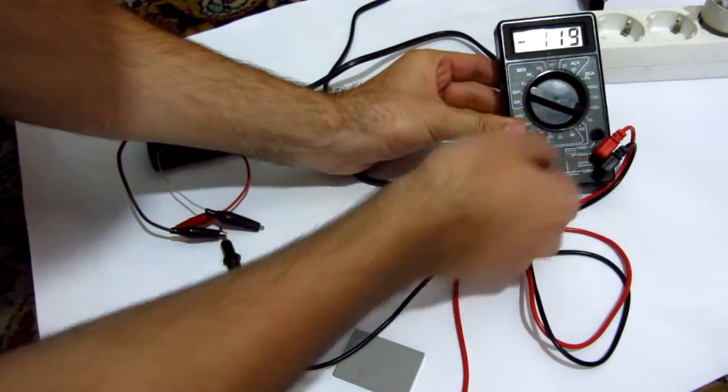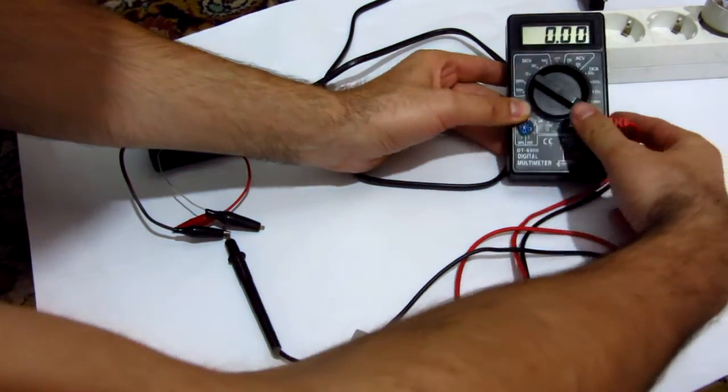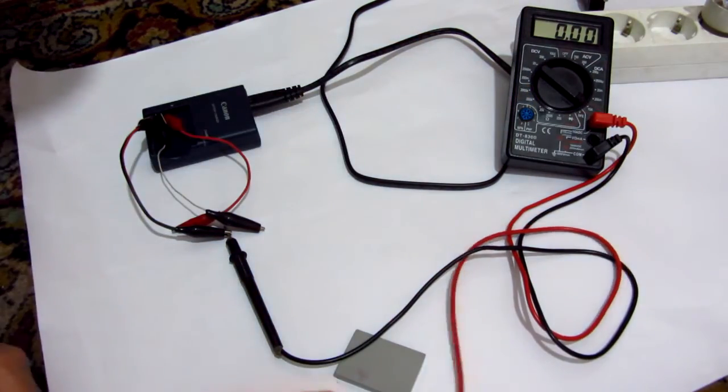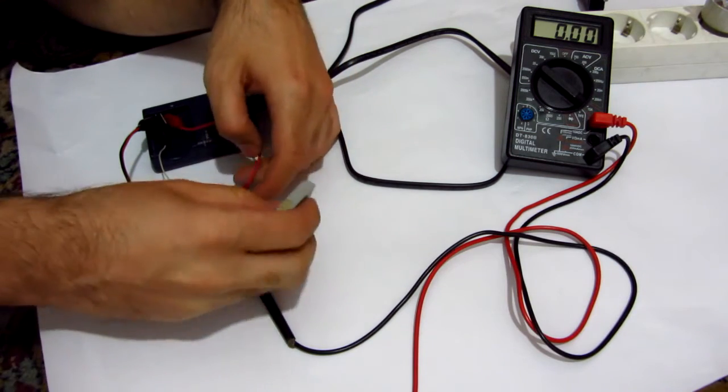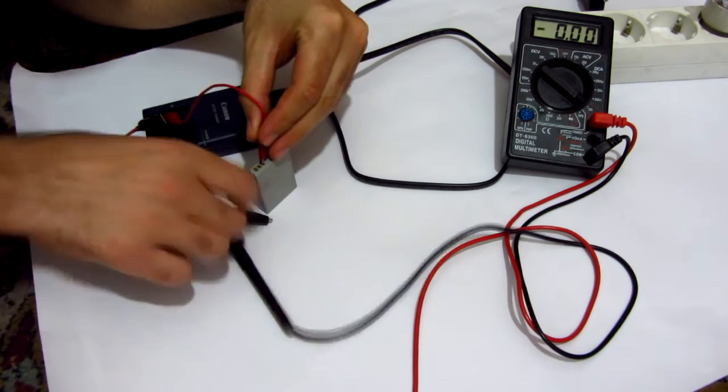Now let's measure the current, the amperes. This time the multimeter is connected in series with the black cable, that's the minus.